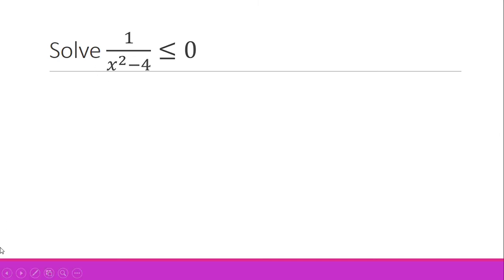This is your teacher Jenny. This is the second part of my video on solving rational inequalities with this kind of pattern, where you have a single term on the left side and zero on the right side. So what if what you're given is like this — how are you going to solve this rational inequality?